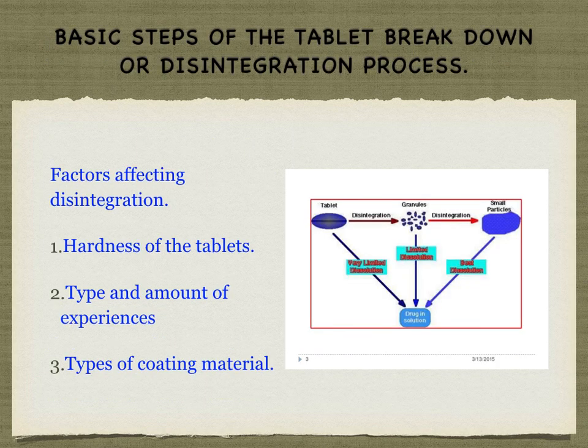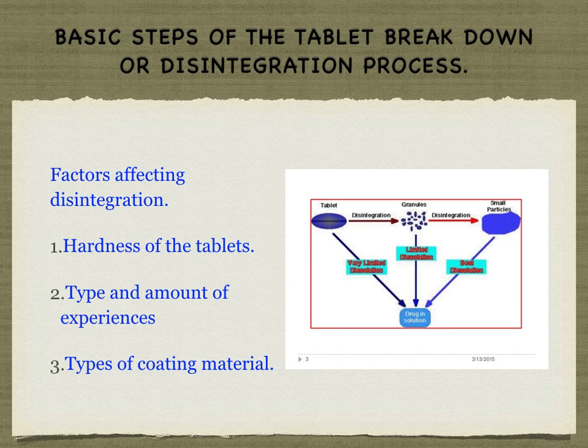This diagram shows the basic steps of the tablet breakdown or disintegration process. Factors affecting disintegration include: hardness of the tablets, type and amount of excipients, and types of coating material.